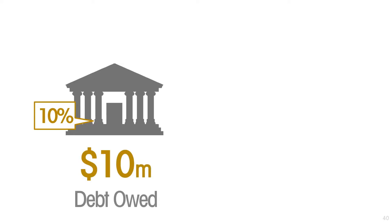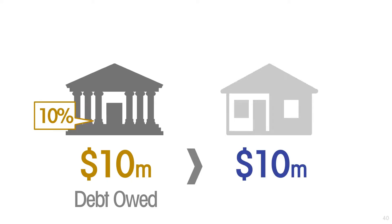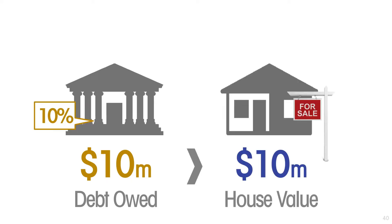You stuff the 10 million dollars into your pocket — that is now your debt to the bank — and you walk out and continue your stroll down the road. A couple of blocks later you come upon a house being advertised for sale. Since you have the money in your pocket, you knock on the door and ask how much it is. The person says 10 million dollars. You hand it over, kick him out, and you have your 10 million dollar house.